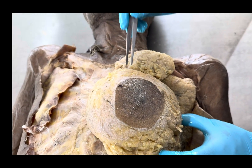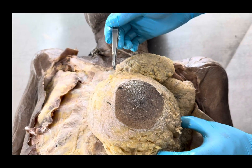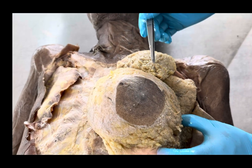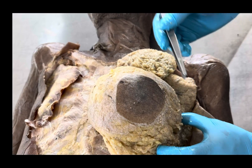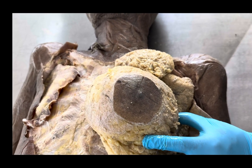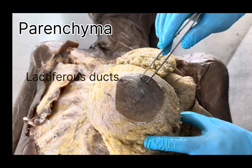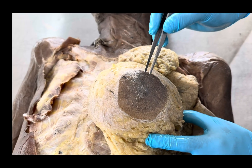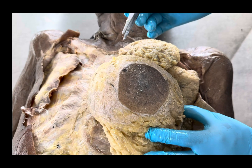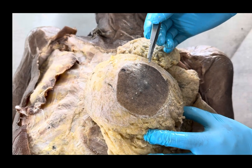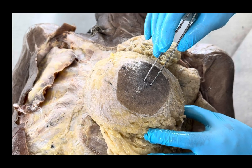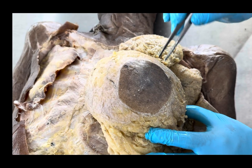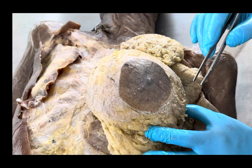The stroma consists of fat and connective tissue. The connective tissue forms ligaments known as the ligaments of Cooper, which help maintain the shape of the mammary gland. The parenchyma consists of 15 to 20 lactiferous ducts arranged radially. Each duct consists of lobules containing acini. The ducts open near the nipple, where each duct has a sinus before opening onto the nipple surface.